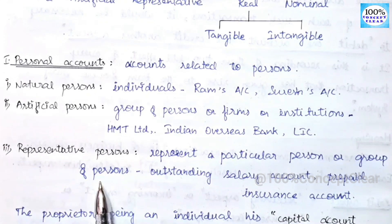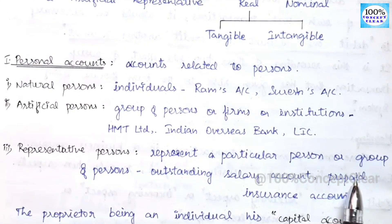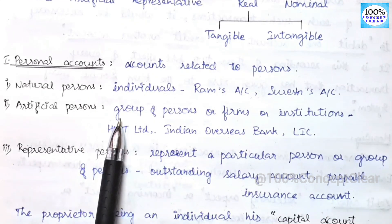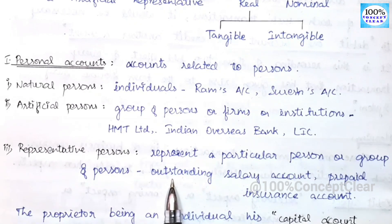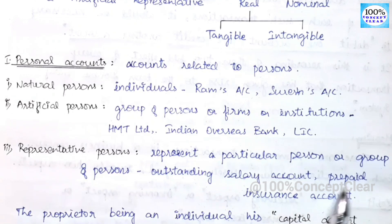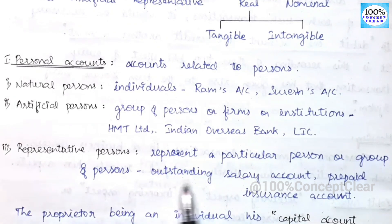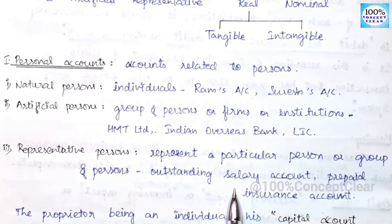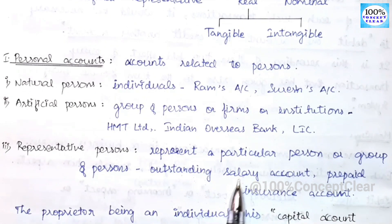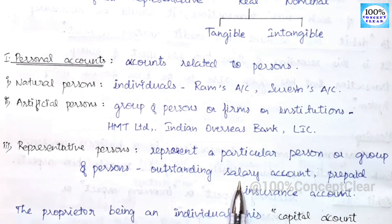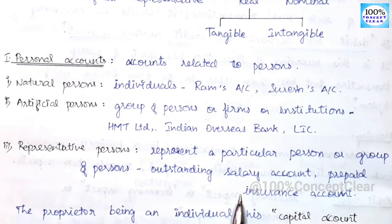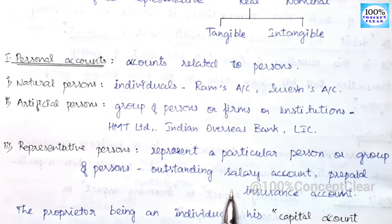Next is representative person — representing a particular person or group of persons. For example, Outstanding Salary Account and Prepaid Insurance Account. The outstanding salary account represents a group of persons — the employees to whom salary is owed. So this is the representative personal account.